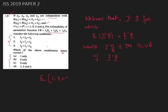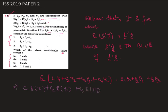Taking expectations, c1*E(y1) plus c2*E(y2) plus c3*E(y3) plus c4*E(y4) equals l1*theta1 plus l2*theta2 plus l3*theta3.